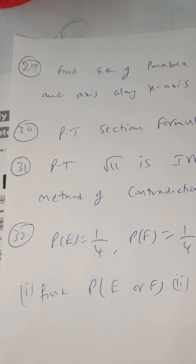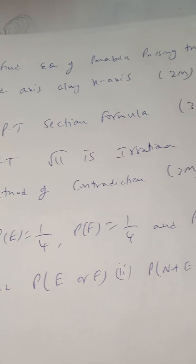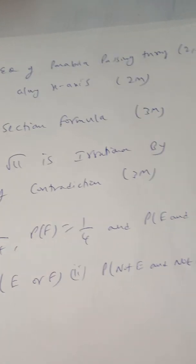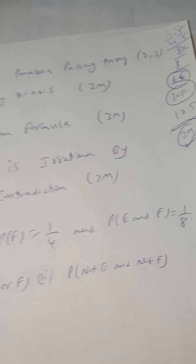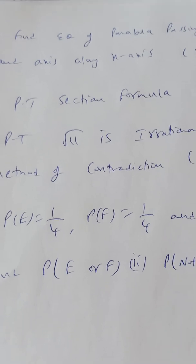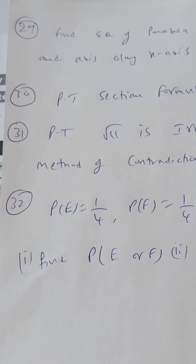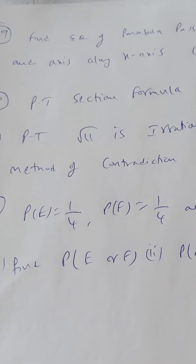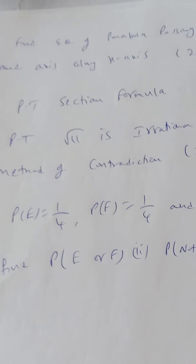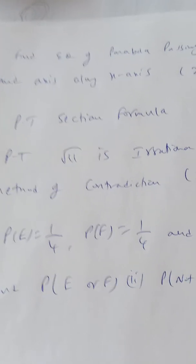Another important question from probability: given P(E), P(F), and P(E ∩ F), find P(E ∪ F) and P(not E and not F). Also in statistics, they will ask one more question: find the coefficient of variation (CV) using CV = (σ / x̄) × 100. This is also an important question in statistics.